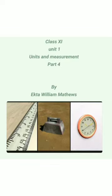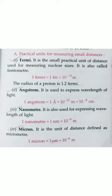In this part we are going to learn about some practical units. First is measuring small distances. Fermi is a unit used at nuclear distances, with the relation 10 to the power minus 15 meters. Armstrong is used for measuring the wavelength. Nanometer is also used for the same, and micron is defined as micrometer, that is 10 to the power minus 6 meter.